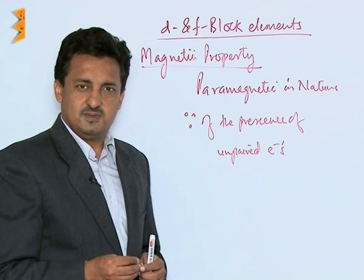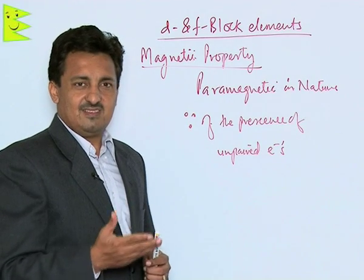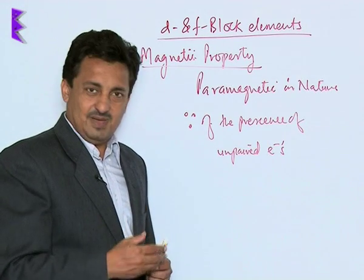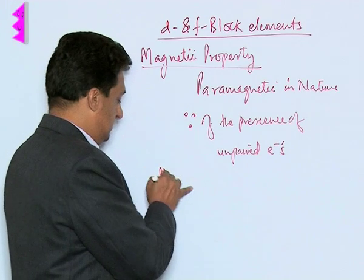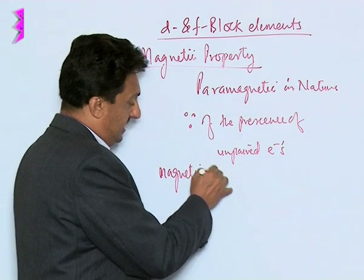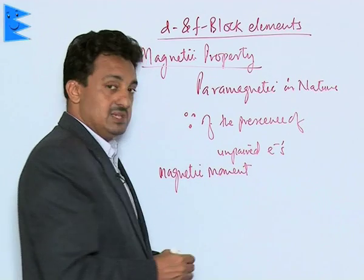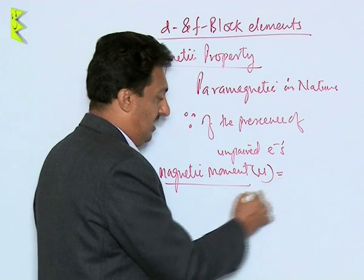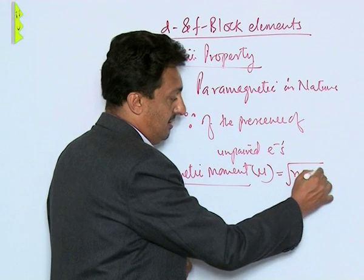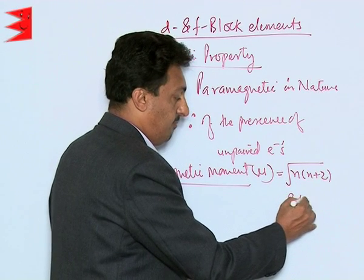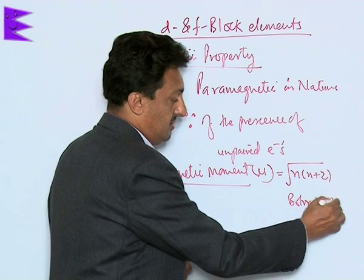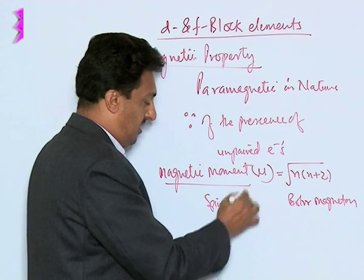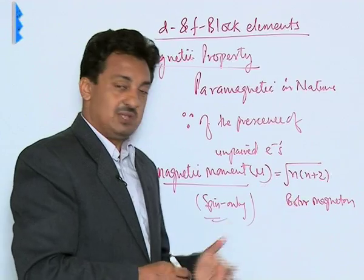A few d-block elements like zinc are diamagnetic because they have all paired electrons and get repelled by an external magnetic field. The magnetic moment of transition elements is explained using the spin-only formula: μ = √(n(n+2)), where the unit is Bohr magneton (BM). This spin-only formula is used to explain and determine their magnetic moment.